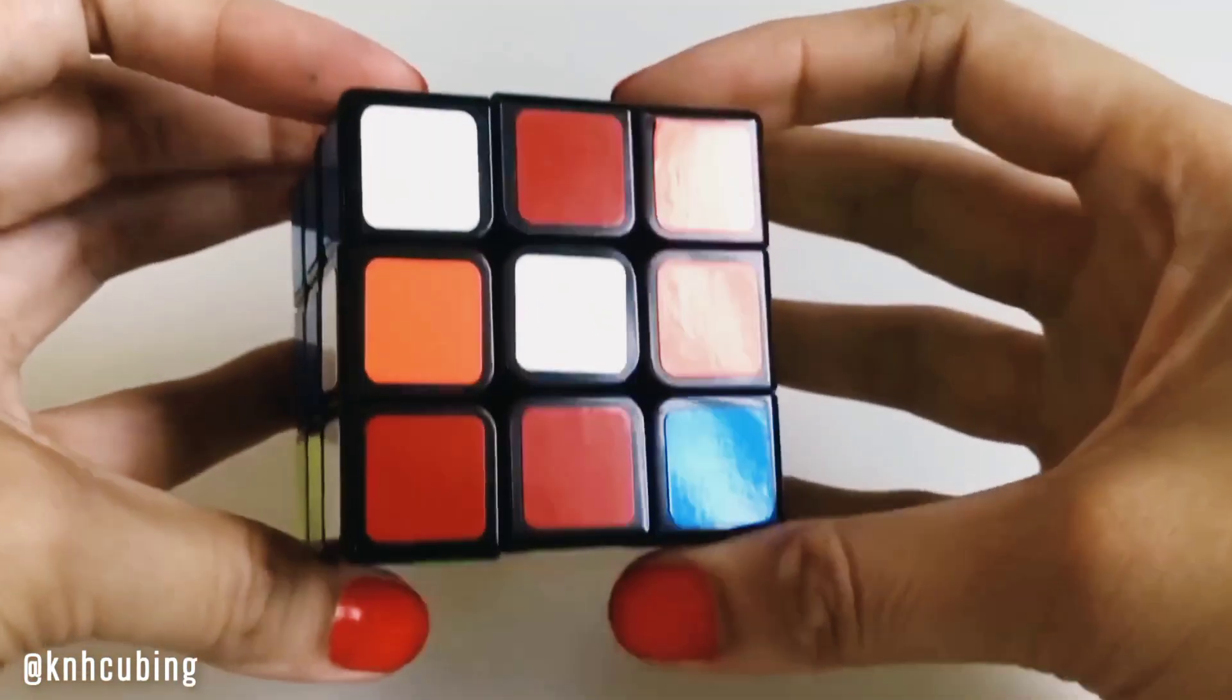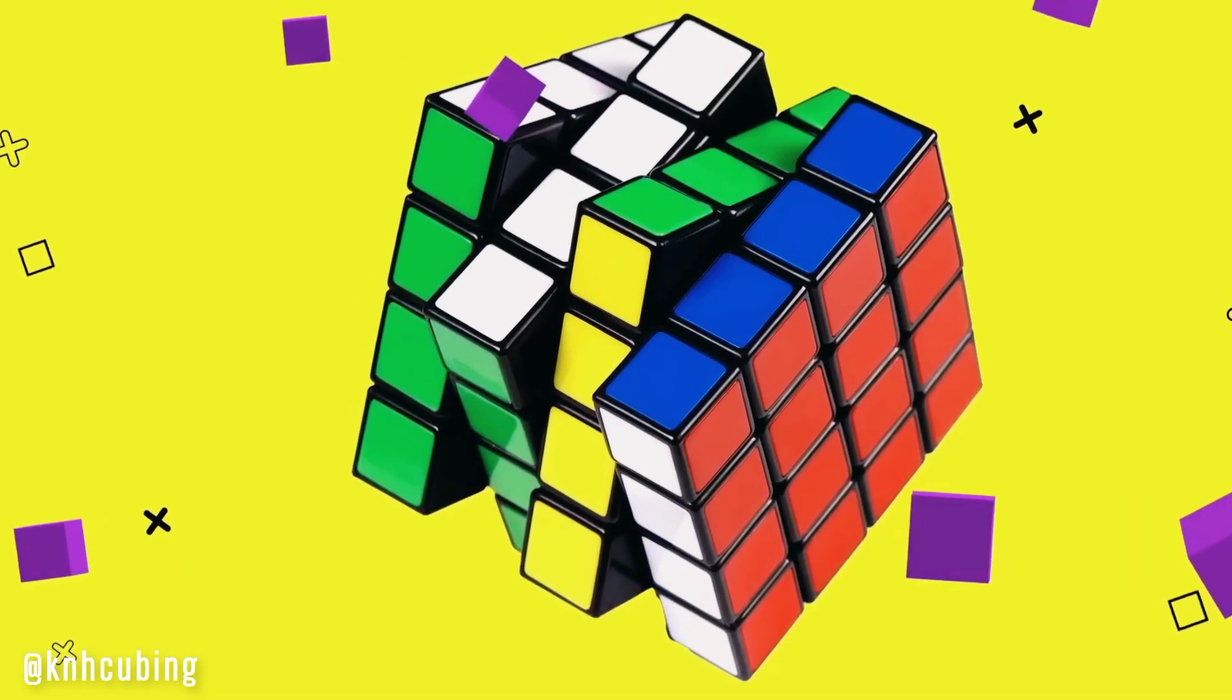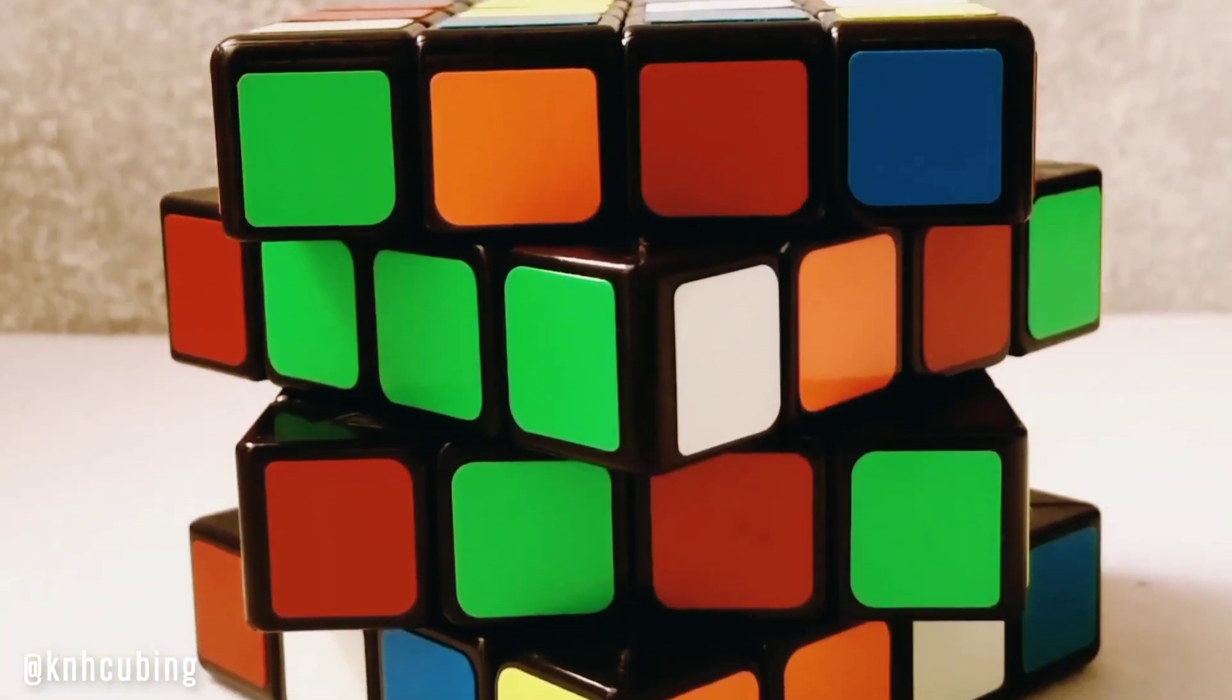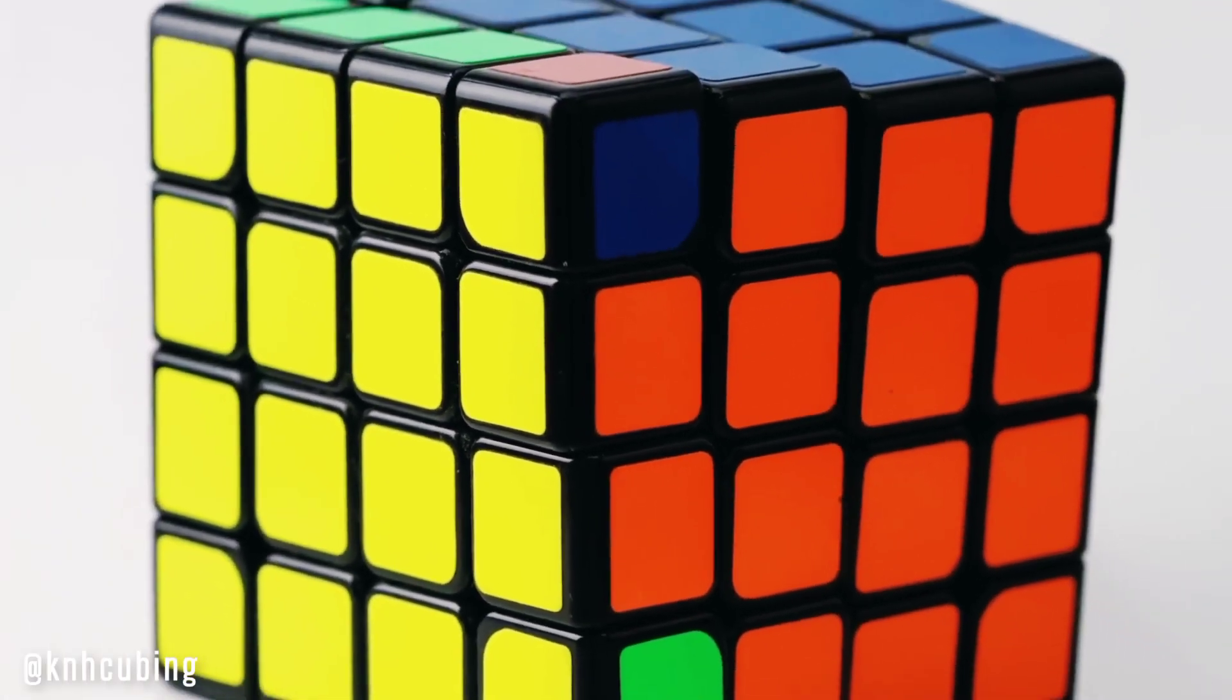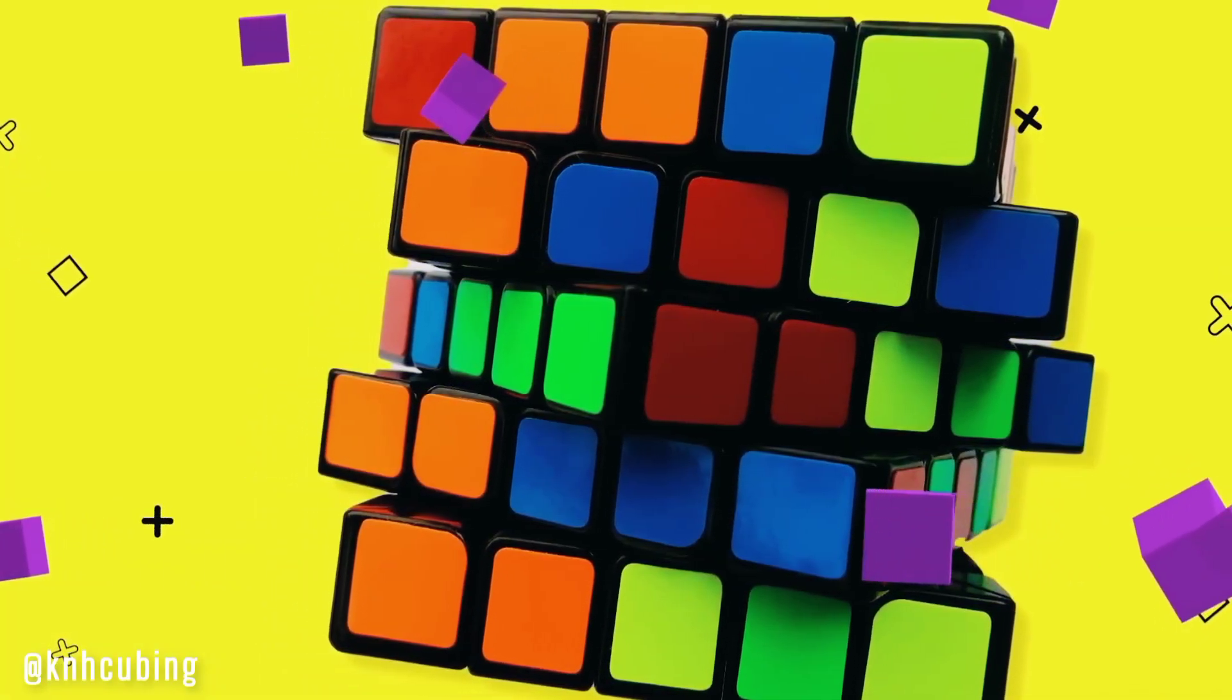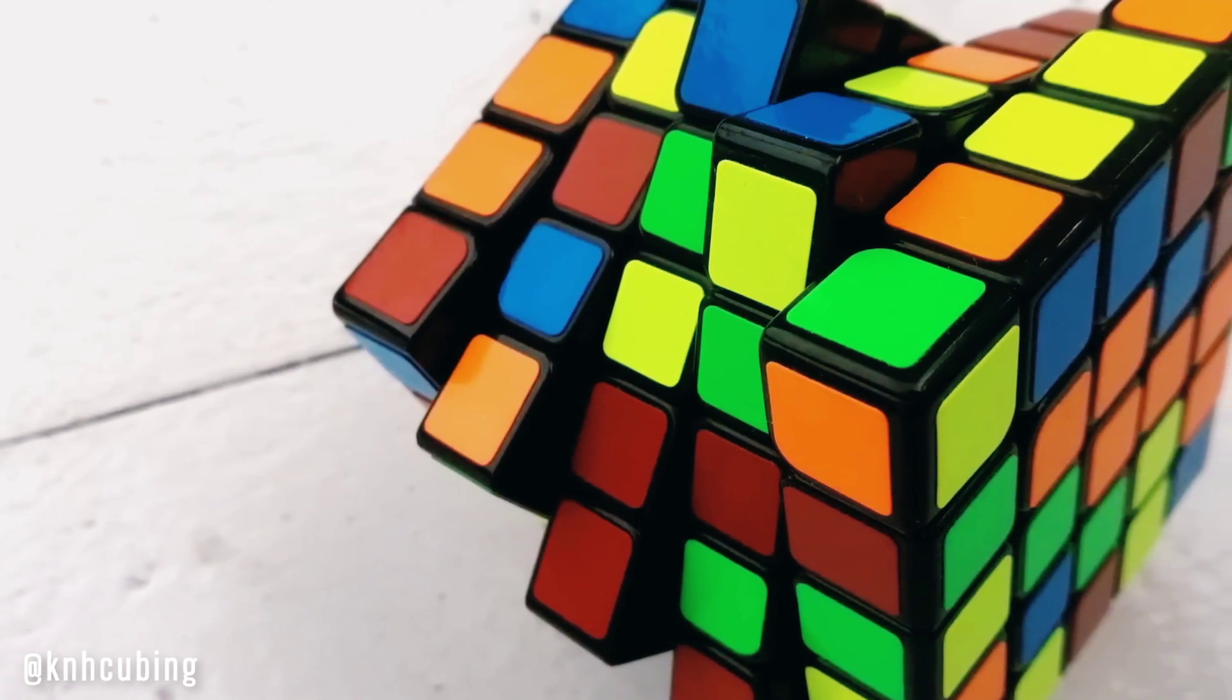The Rubik's Cube also has many variations. The standard one is 3x3x3. There is also a 4x4x4 cube called Rubik's Revenge. It was invented in 1981, seven years after the original one. The record of solving this one is 17.42 seconds. The 5x5x5 cube is called the Professor's Cube. And the record is 33.02 seconds.